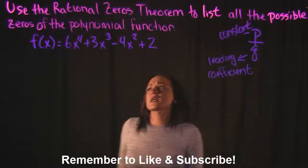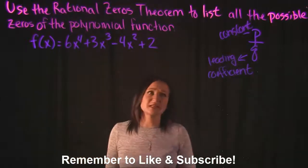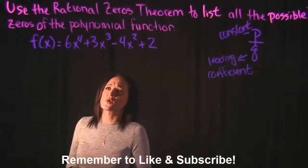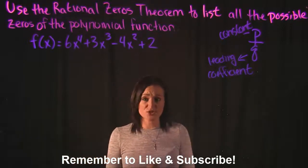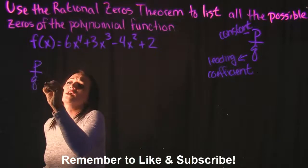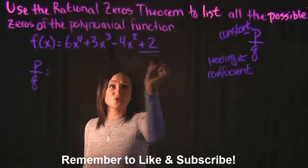So taking a look at our function, f(x) is equal to 6x to the fourth plus 3x cubed minus 4x squared plus 2. So for our function, P is going to be 2,